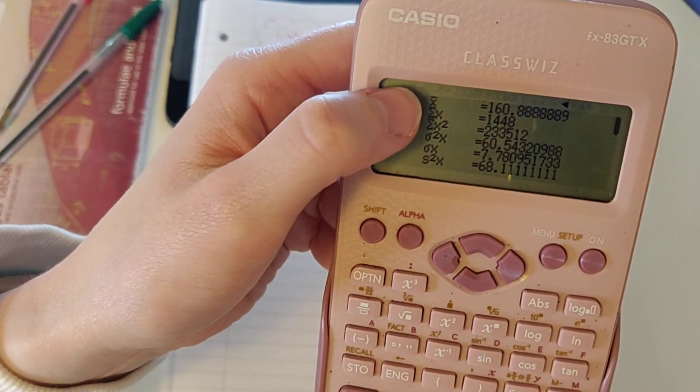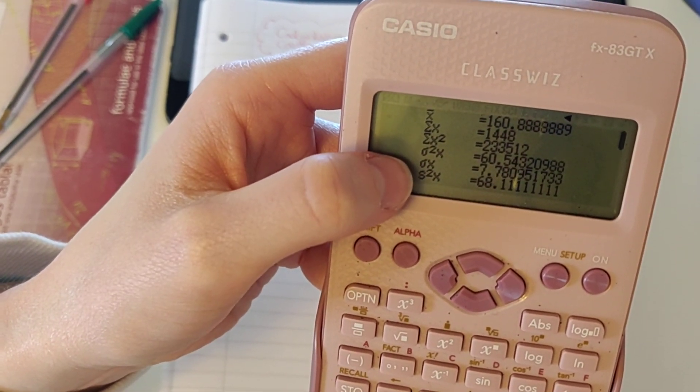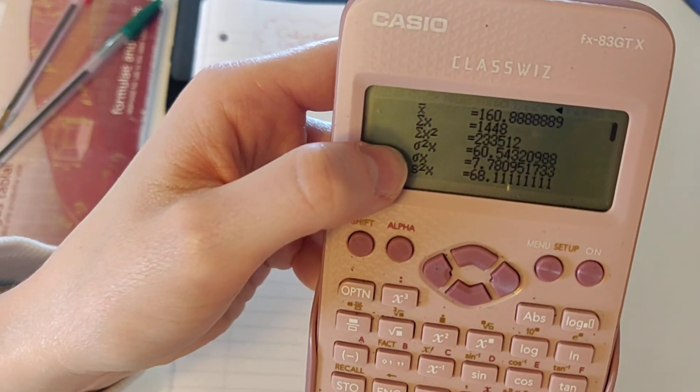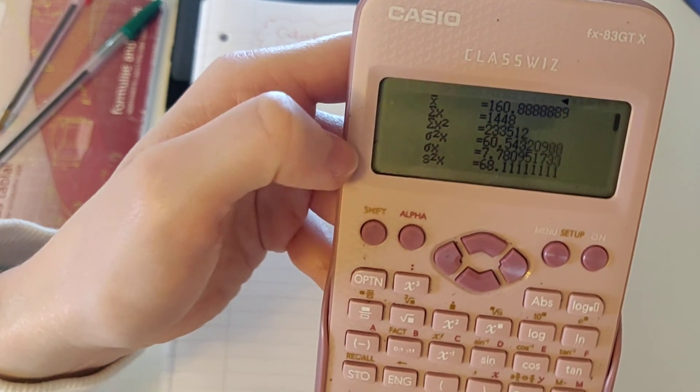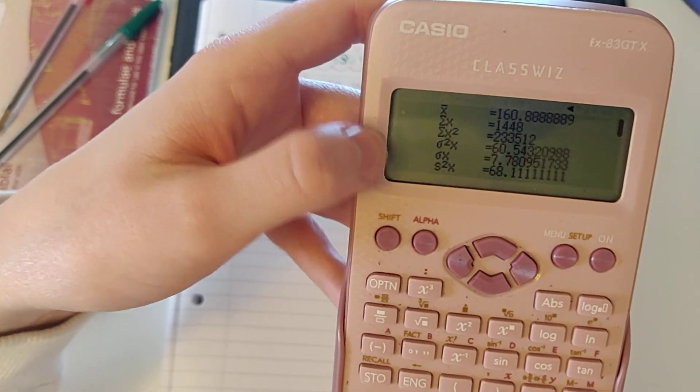I have x with a little hat, which I know is my mean, is 160.5. I know that I have my sigma x is my standard deviation, which is 7.78. So both of these would be important calculations going forward as well to know on our calculator.